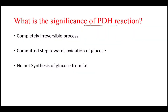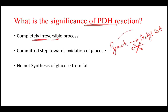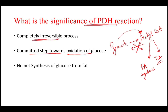The significance of this PDH reaction is that it is a completely irreversible process. Once pyruvate is converted to acetyl-CoA, acetyl-CoA cannot be converted back to pyruvate. Acetyl-CoA can be utilized for many purposes: it can be used for fatty acid synthesis and for the citric acid cycle. This is also a committed step towards oxidation of glucose, and as this reaction is irreversible, there is no net synthesis of glucose from fat.